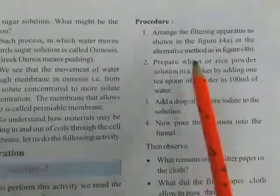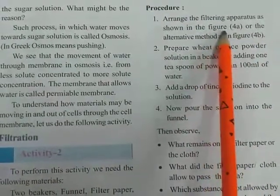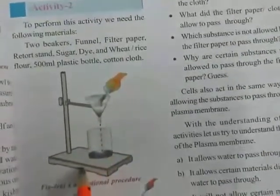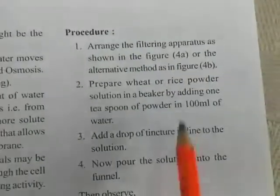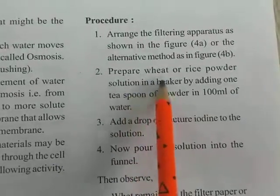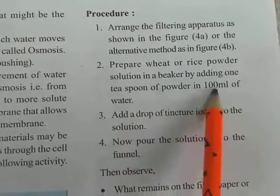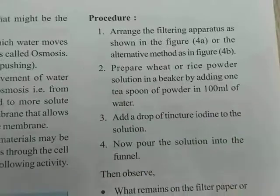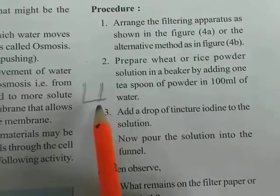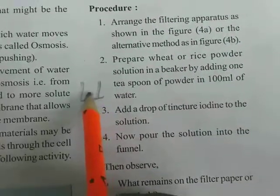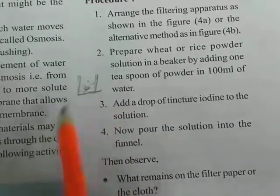Let us discuss the procedure. Arrange the filtering apparatus as shown in figure 4A. Next, prepare a wheat or rice powder solution in a beaker by adding 1 teaspoon of powder in 100 ml of water.